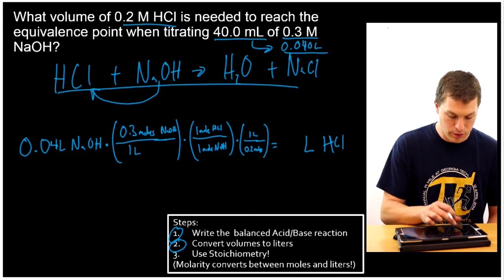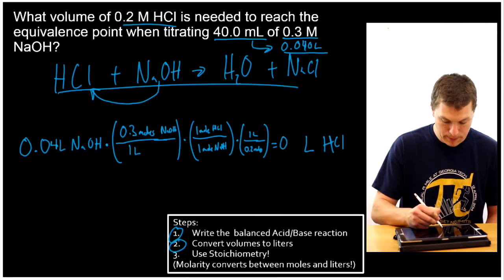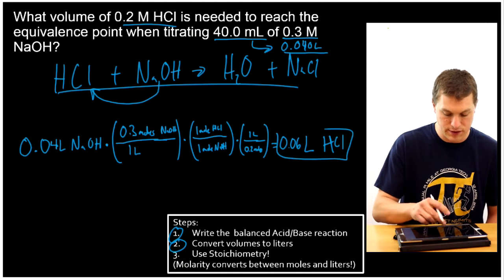Alright, so now I just multiply through. And when I do that, I'm going to get 0.06 liters HCl when I round to 1 sig fig.